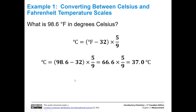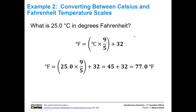Let's practice a conversion. Normal human body temperature is 98.6°F and we want to convert it to Celsius. We plug in our Fahrenheit value, subtract 32 to get 66.6, then multiply by five-ninths, giving us 37.0°C. Note that we maintain three significant figures, and the conversion constants are considered exact numbers so they don't count for significant figures.